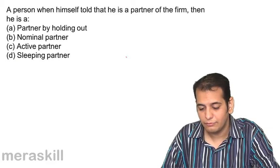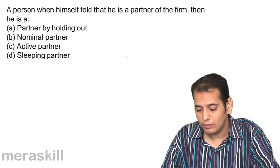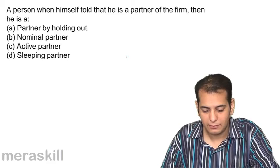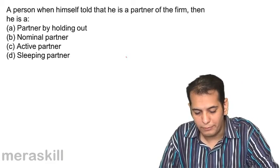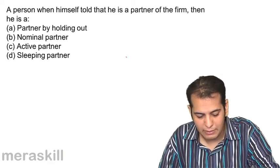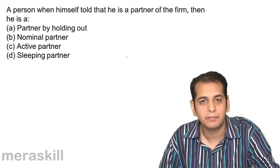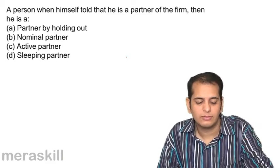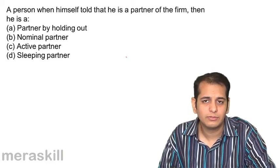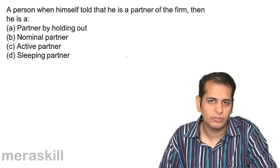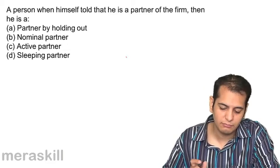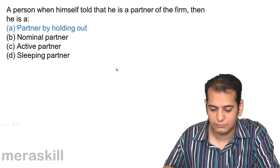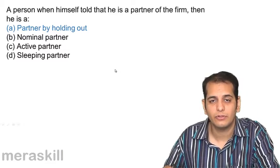A person who himself states that he is a partner of the firm — A. Partner by holding out. B. Nominal partner. C. Active partner. D. Sleeping partner. He himself proclaims to be the partner, so he becomes a partner by holding out. That is correct.